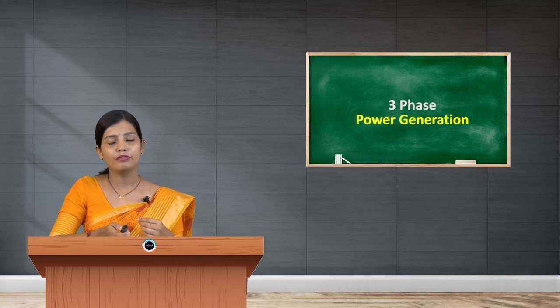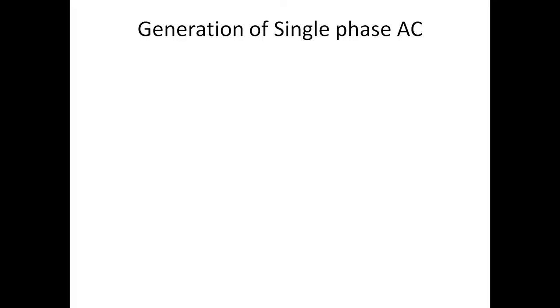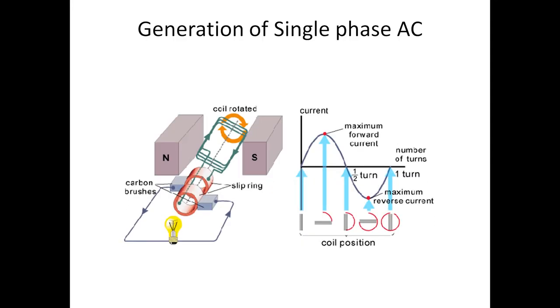Now let us get into the generation of single-phase AC. This we have already learned in our lower classes. Just look at the diagram. In this diagram, you can see there is a north and south pole permanent magnet, and in between those magnets you can find a conductor or coil of conductor. This coil of conductor will be continuously rotating so that the magnetic field lines flowing between north pole and south pole...